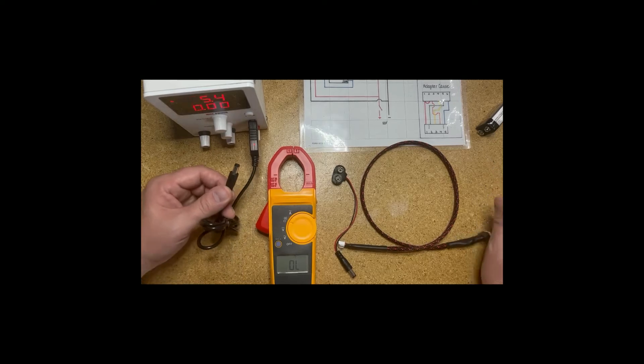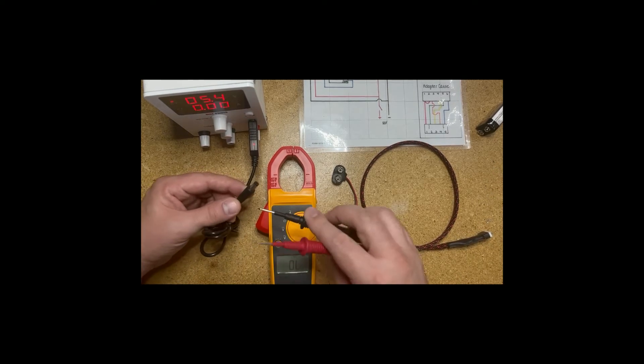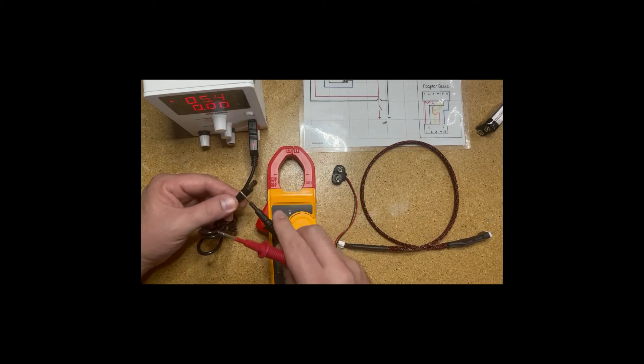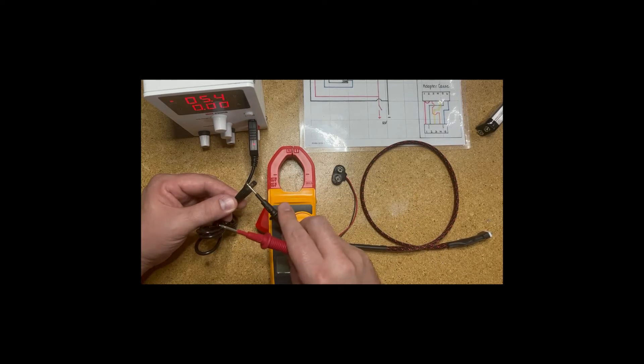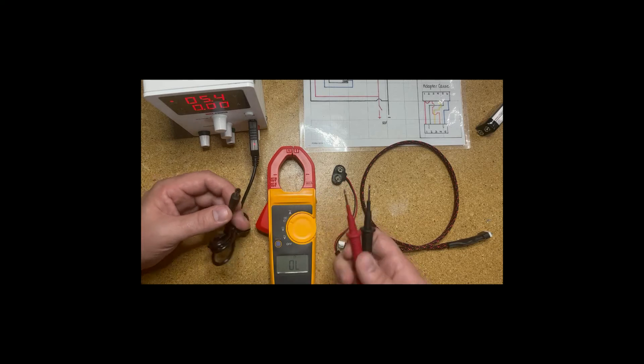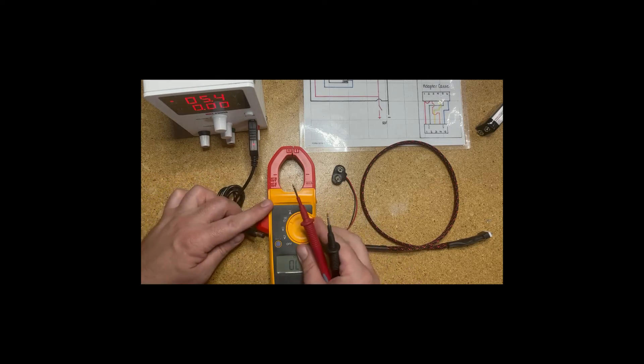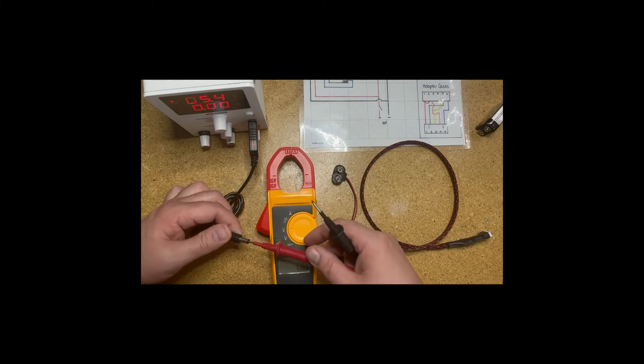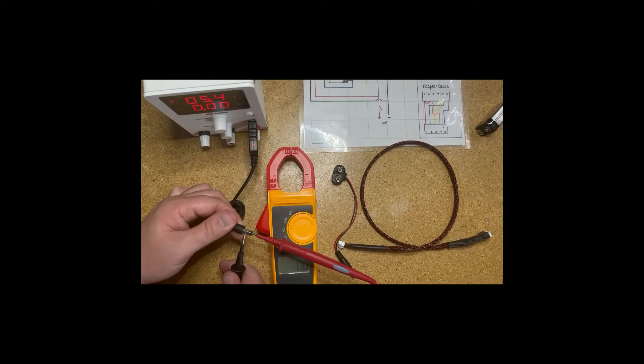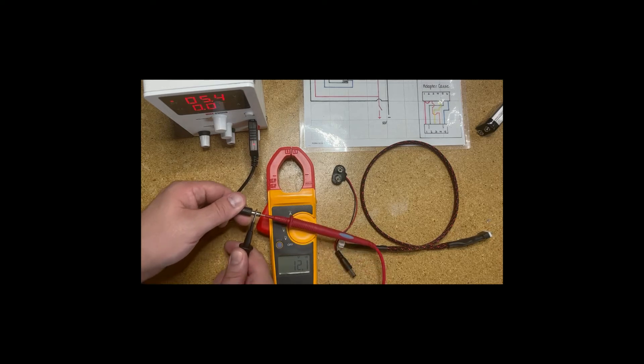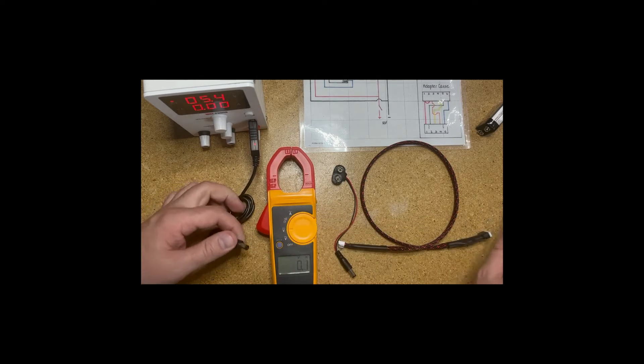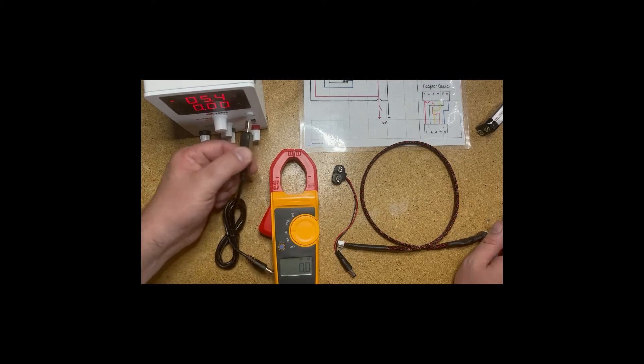The way a barrel connector works is we've got our 12 volts coming from inside of the barrel and then the ground or negative side is the outside. So if I set my meter to 12 volts DC, stick one pin on the inside of that barrel and one on the outside I have 12 volts DC. So I've just checked out my power converter, I know that that guy's good.